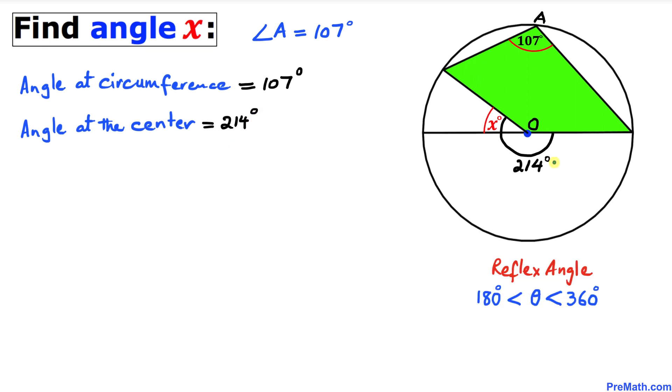Now we can see that this angle at the center, which is 214 degrees, is a reflex angle. An angle between 180 degrees and 360 degrees is called a reflex angle. The angle on a straight line is 180 degrees.